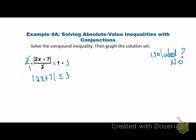Okay, now what are we ready to do? We're not ready to flip yet. We need to break it up into the positive and the negative first. So we break it into our positive: 2X plus 7 less than or equal to positive 3. And now we come over here and do the negative: negative 2X plus 7. But now what do we have to do? There's your flip — that turns it into greater than or equal to 3.